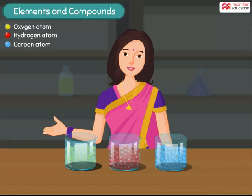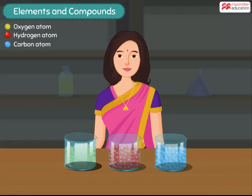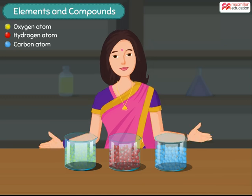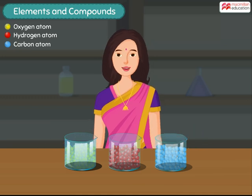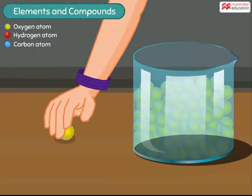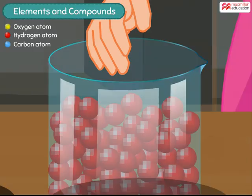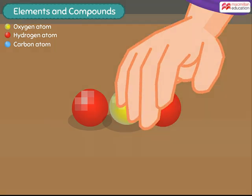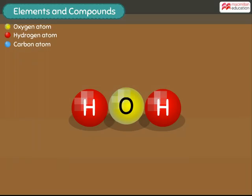Now the water molecule. One water molecule is made up of two hydrogen atoms and one oxygen atom. So we need one yellow bead and two red beads to make one water molecule.